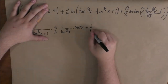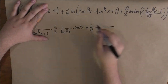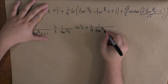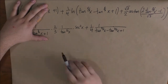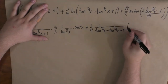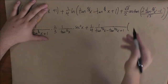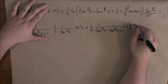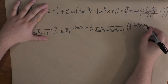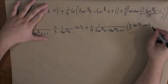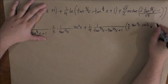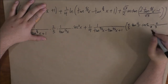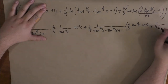Now our next term: we keep the one-quarter. Again we have natural log, so we have one over that business inside — tangent four-thirds x minus tangent two-thirds x plus one. Now we have to differentiate the inside, and we're going to have two terms as a result, so we need parentheses. Differentiating tangent to the four-thirds gives four over three times tangent one-third x times secant squared x, and then minus — because we have a minus in there — two-thirds times one over tangent one-third x, times secant squared x for the derivative of tangent.